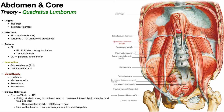In the previous video, we discussed the iliopsoas muscle group, which is composed of the iliacus muscle and the psoas major muscle. In this video, we're going to talk about the quadratus lumborum and the psoas minor. First, the quadratus lumborum muscle.